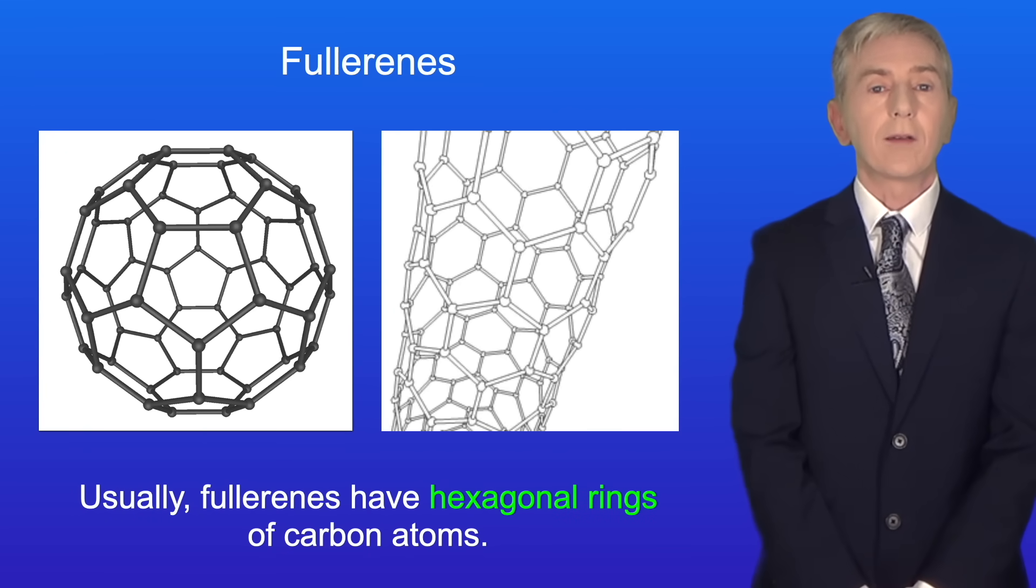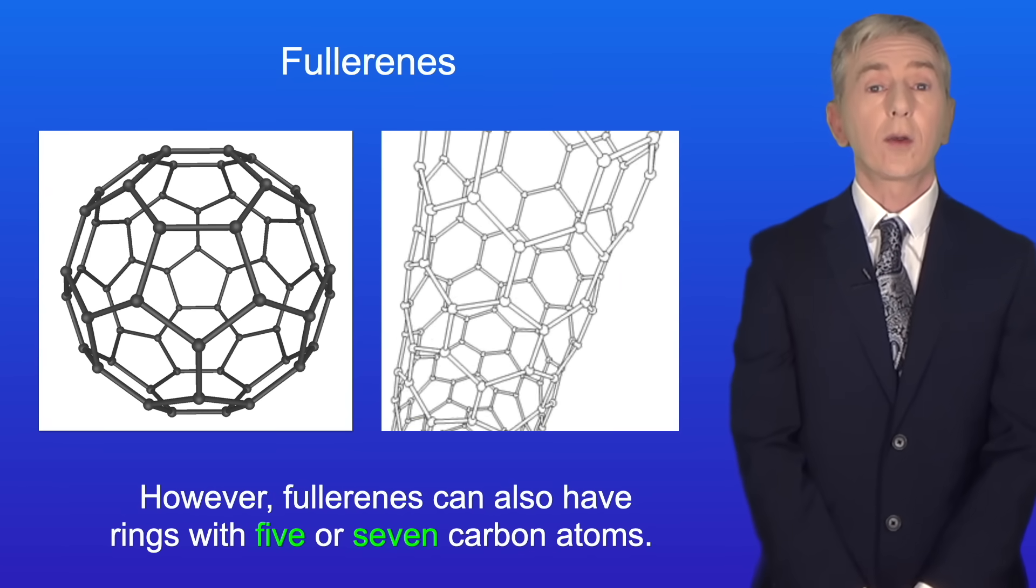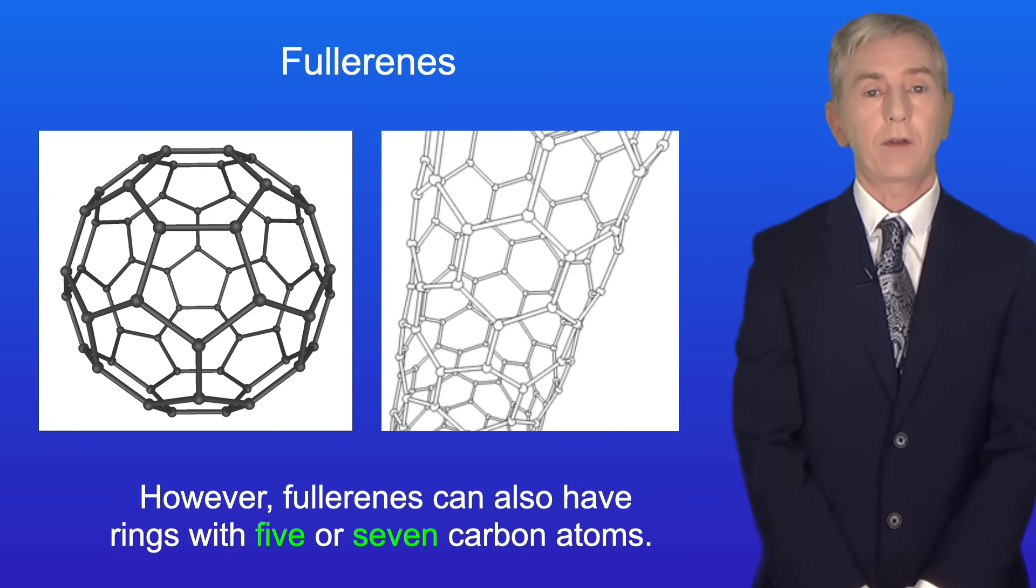Usually, fullerenes have hexagonal rings of carbon atoms. However, fullerenes can also have rings with five or seven carbon atoms.